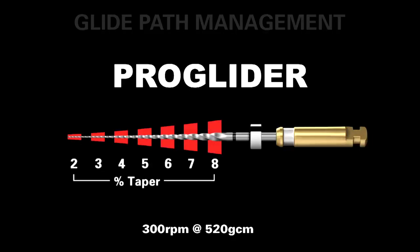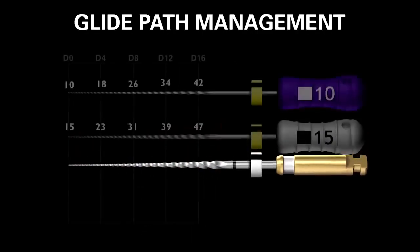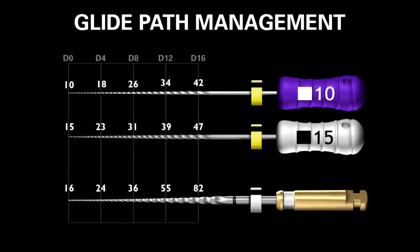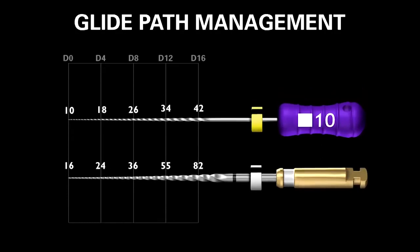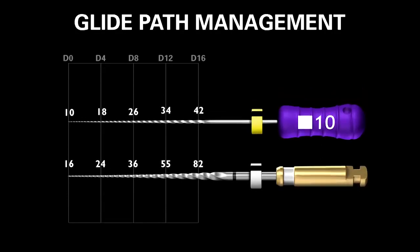Looking at the cross-sectional geometries of these various instruments every four millimeters up the active portion, it's informative to compare the ProGlider with the white 15 hand file. Notice that the ProGlider is virtually the same at the front end, but notice how different the cross-sectional geometries become as we move to D8, D12, and D16. One ProGlider can make a significantly bigger pathway than a single 15 file. The new approach is: use the 10 file to catheterize and secure the canal, then expand that glide path with one single ProGlider file.